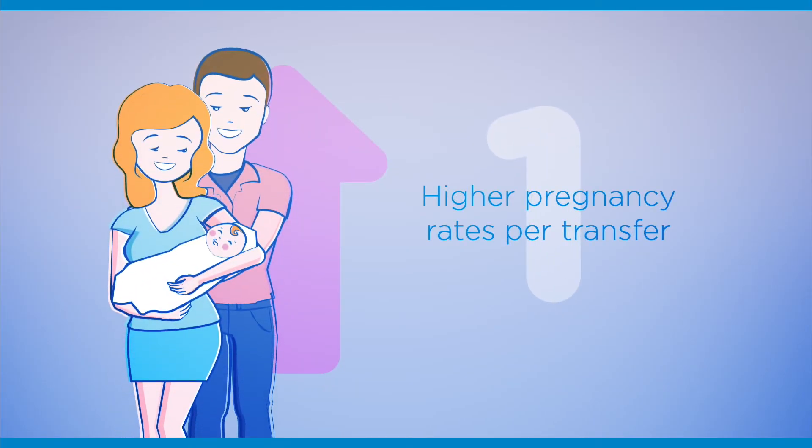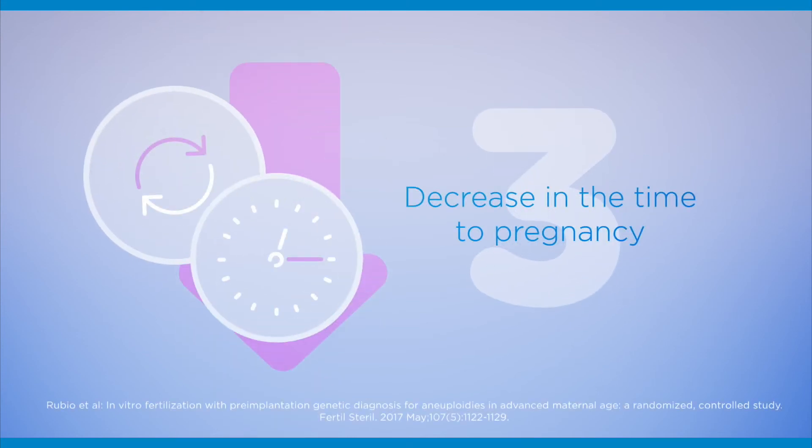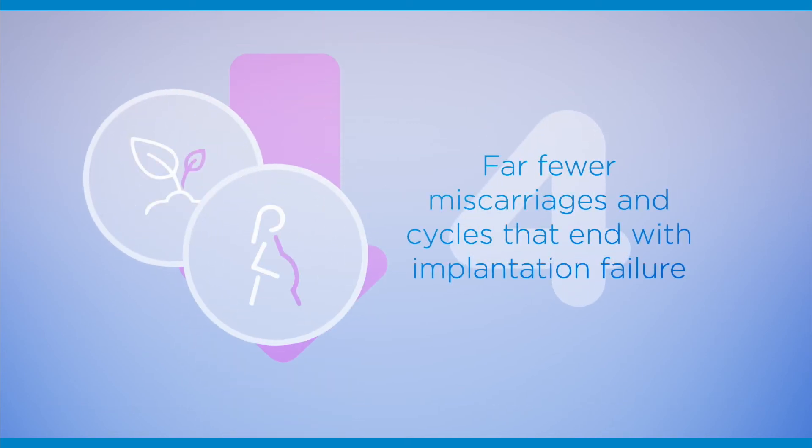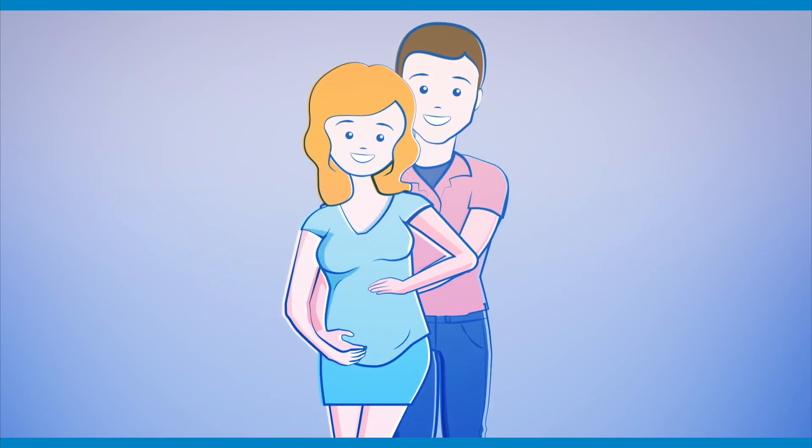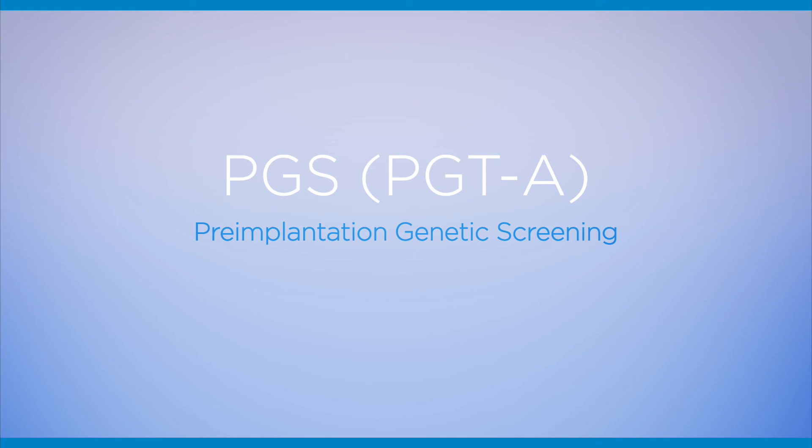higher pregnancy rates per transfer, fewer IVF transfer procedures, and according to iGenomics research, an average decrease in the time to pregnancy of 2 months when compared to cycles without PGS, far fewer miscarriages and cycles that end with implantation failure. Please ask your doctor about PGS testing during your IVF cycle or ask us for more information.